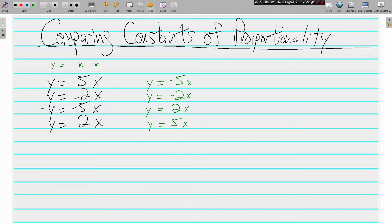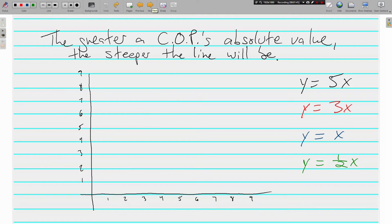One thing I do want you to make sure you understand is that the greater a constant of proportionality, I abbreviated it COP, the greater a COP's absolute value, the steeper the line will be. We've already visited this year about absolute value, and you know that absolute value is a number's distance from zero. It doesn't matter whether it's positive or negative, but the further away that number is from zero, the steeper it's going to make the line.